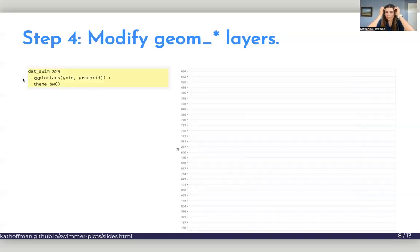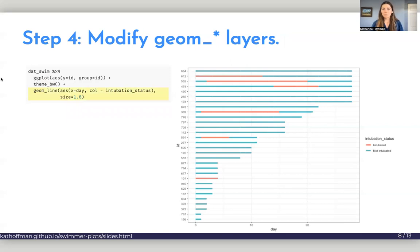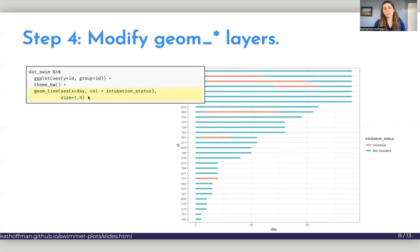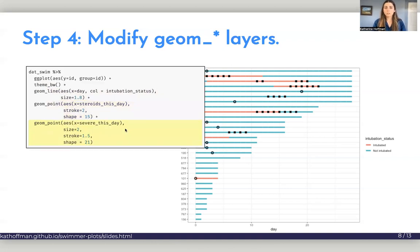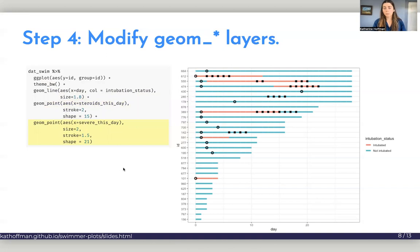And of course, this plot is not very useful right now because it's just a bunch of black circles and no way to really distinguish them. So let's modify those geom layers. And to modify those, let's start over. So we'll go back to sort of our blank slate ggplot. And this time when we add the geom layers, we're going to start adding some characteristics of the geometries outside of the aesthetics argument. So here I've added, I've bumped up the size for the intubation status. I'm also going to change the stroke and the shape to be squares for my steroids indicators.